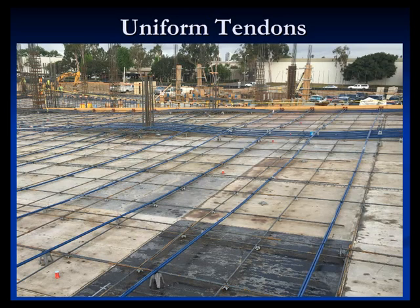Starting out with uniform tendons, we're going to discuss the layout of a two-way slab. A two-way post-tension slab is laid out with a band direction — all the tendons in one direction grouped together. Perpendicular to that are the uniform tendons. In this photograph, the tendons are in blue. The uniform tendons are equally spaced across the slab. They are draped high over the supports — tension on the top of the slab — and low at mid-span, so tension on the bottom. The profile of these strands should match the moment profile.